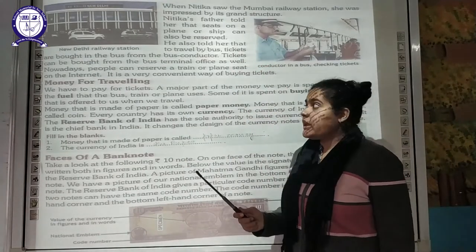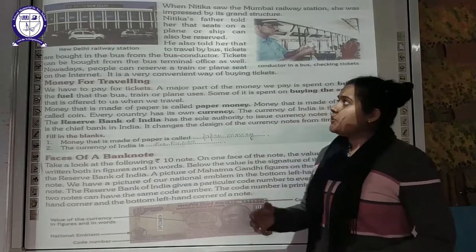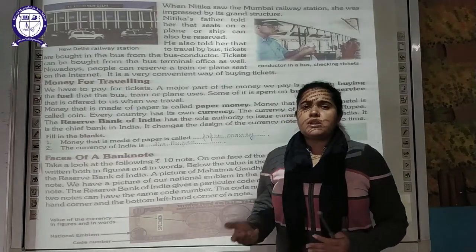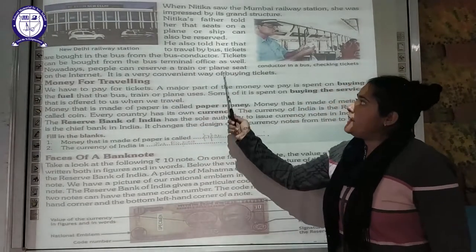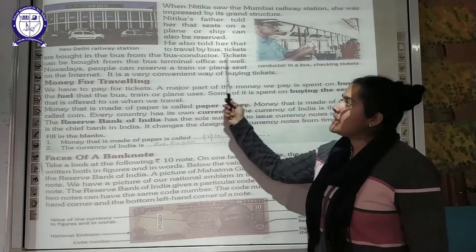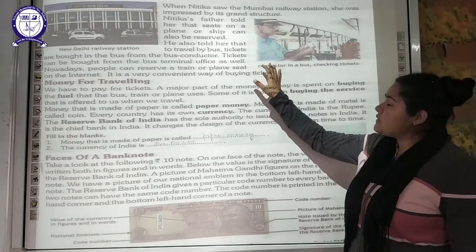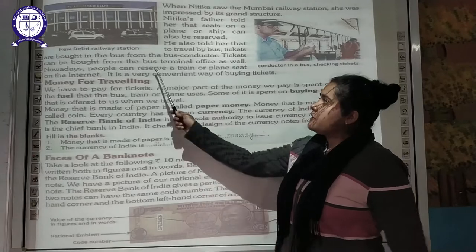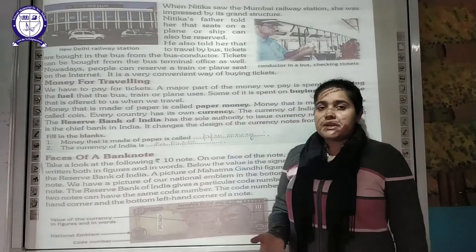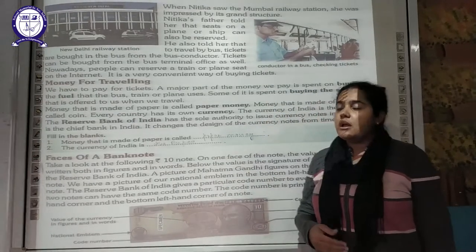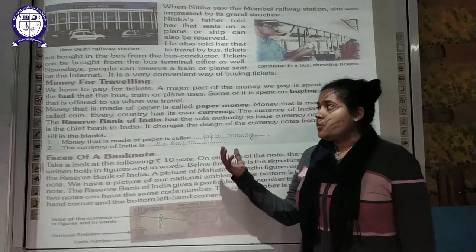Nitika's father told her that not only while travelling by train, but you can also reserve tickets when travelling by ship or plane — in those cases also, seats are reserved in advance. To travel by bus, tickets are bought from the bus conductor during the journey, or you can buy them from the bus terminal office. Reservations for planes and trains can also be done through the internet via online reservation facilities.